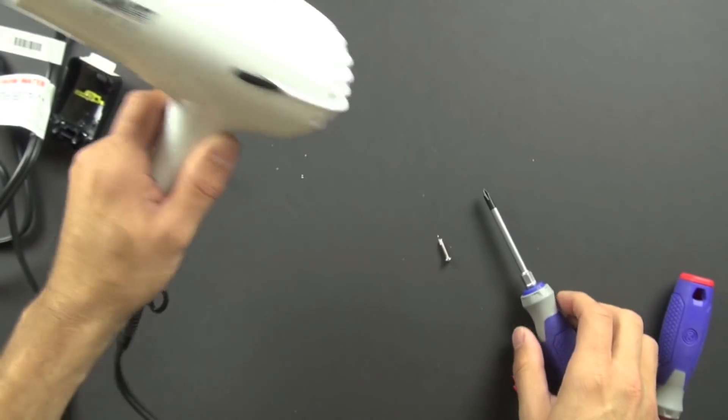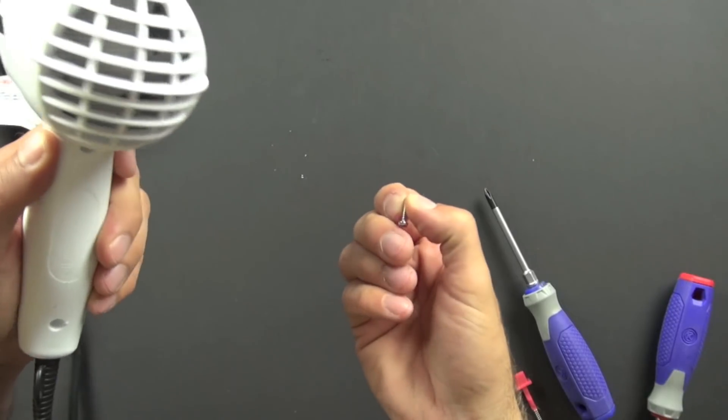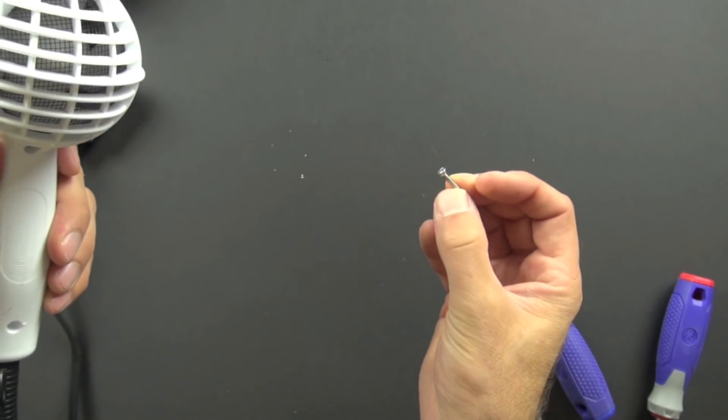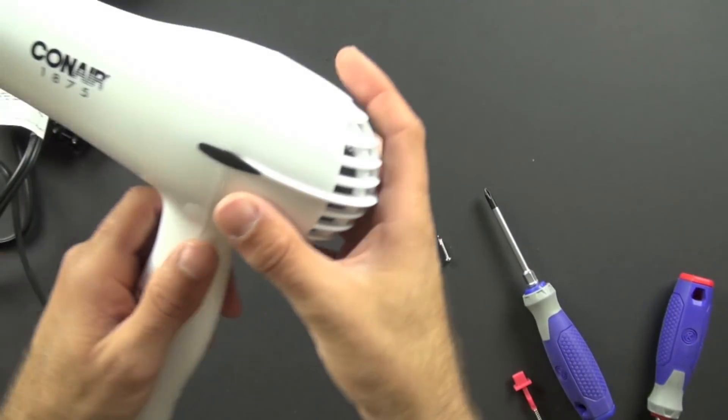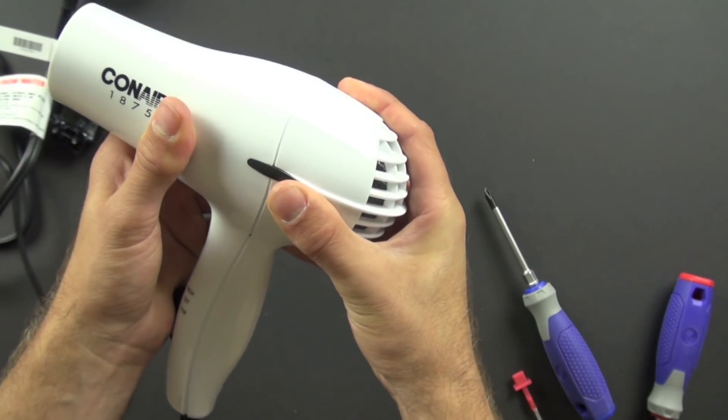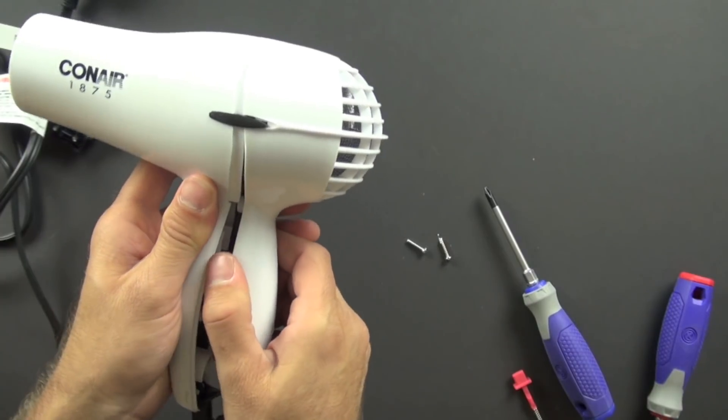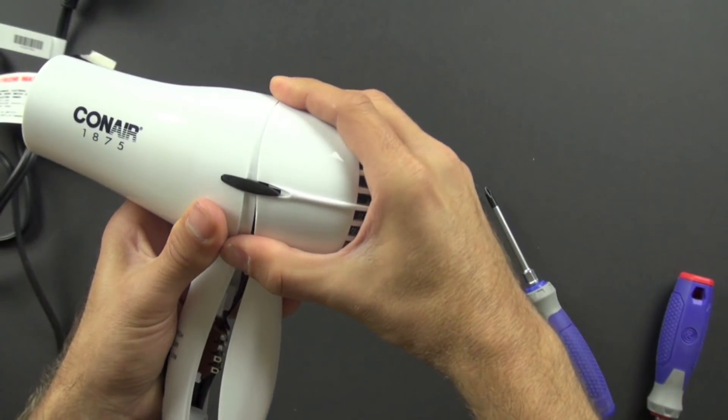And because those screws are visible, they may have also used a bright finish chrome because it looks better than say a painted screw would. It also provides a little better corrosion resistance than paint does.